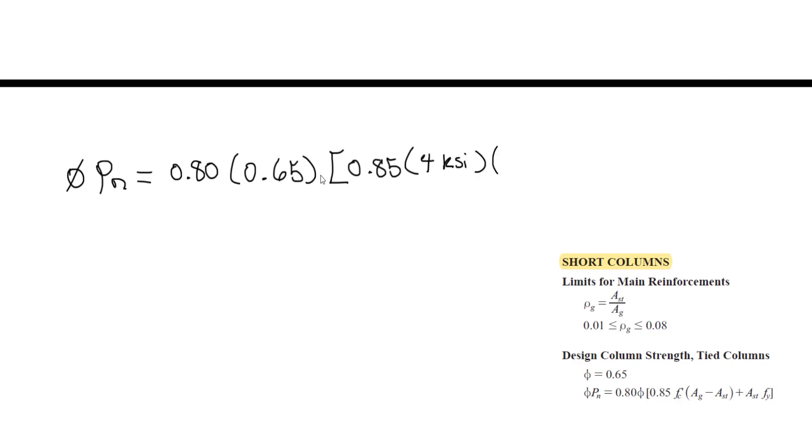Times the gross area of 484 inches squared minus the steel area of 8 inches squared, plus the steel area of 8 inches squared times the yield strength of 60 ksi.